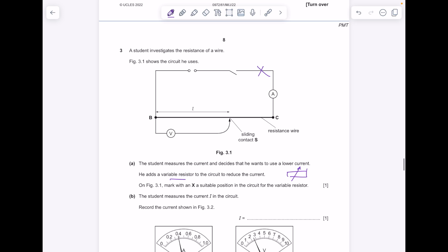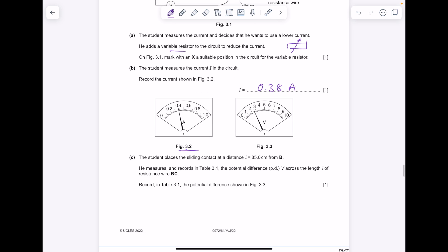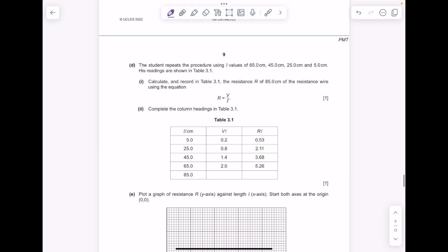The student measures the current in the circuit. Record the current shown in figure 3.2. So read it nice and carefully at 0.38 amps. The student places the sliding contact at a distance L equals 85 centimeters from B. He measures and records in table 3.1 the potential difference across the length of the resistance wire BC. Record in table 3.1 the potential difference shown in figure 3.3. So read the number of volts there, you can see it is 2.6, so pop that there.